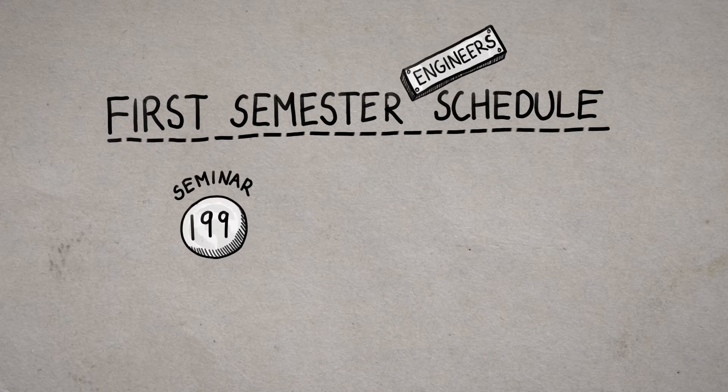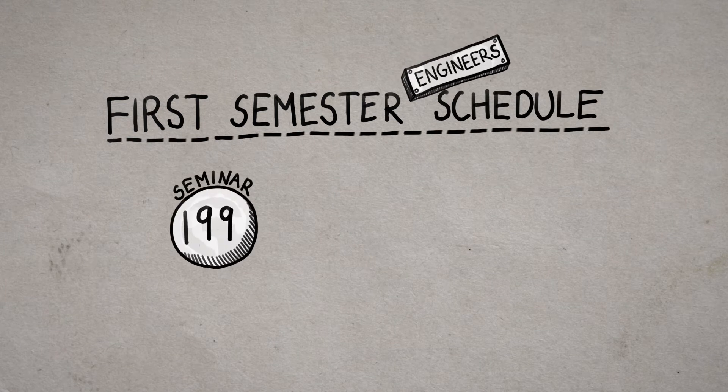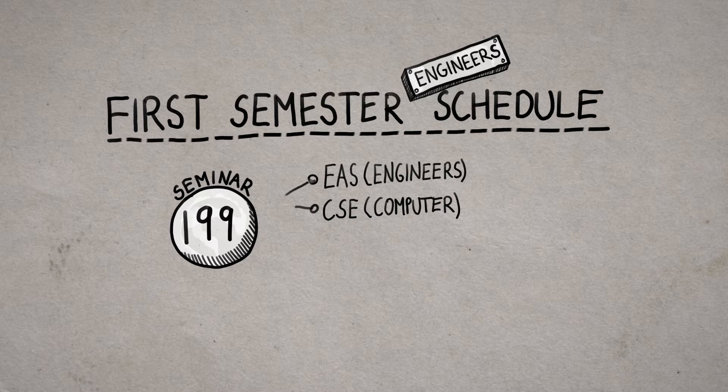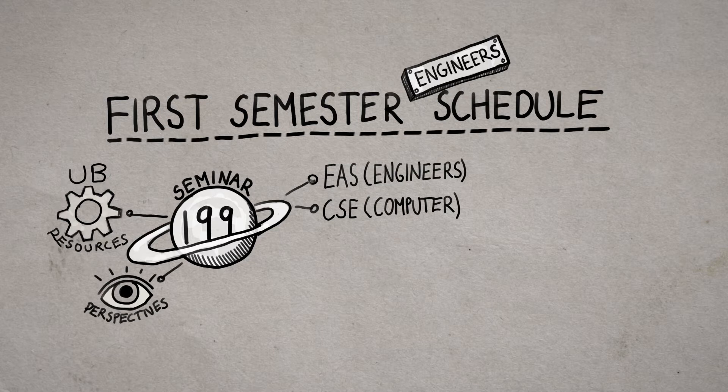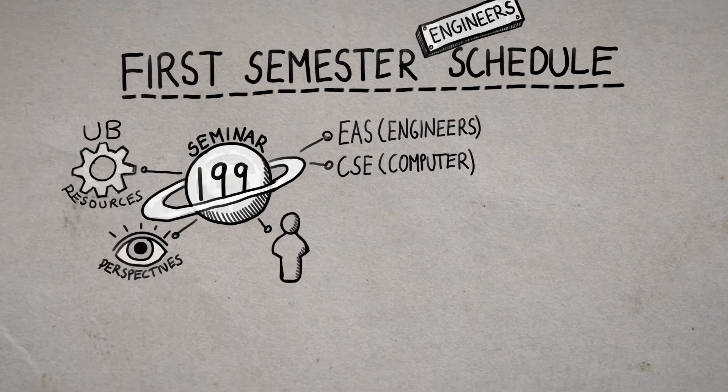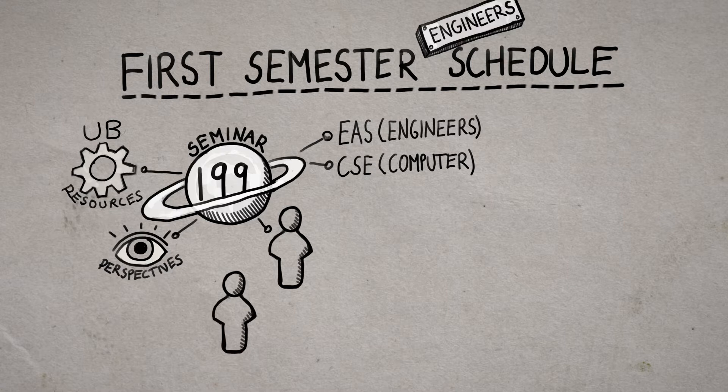Now that you know how your schedule is made, let's talk about what a typical first semester looks like. All students have to take the UB Seminar. Engineering students take EAS 199 and Computer Science/Engineering students usually take CSE 199. The UB Seminar is home base. You'll learn about UB resources and perspectives on Engineering and Computer Science. You'll build relationships with your professor, student leaders, and most importantly, each other. Quick note, Project Lead the Way credit does not substitute this class.